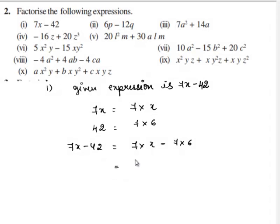we have 7 as the common factor which is multiplied by the term x minus 6. Therefore, the factorized expression for 7x minus 42 is 7 times x minus 6.